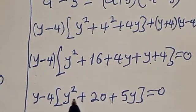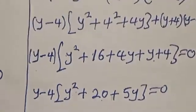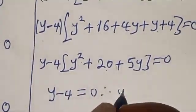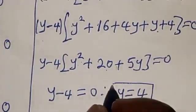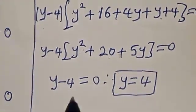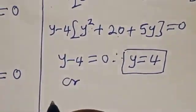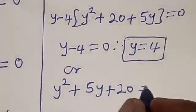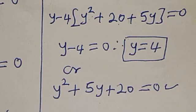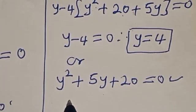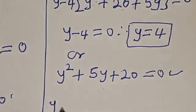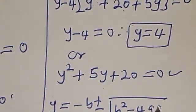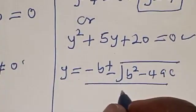Now we have two cases: y minus 4 equals zero, or y squared plus 5y plus 20 equals zero. From the first case, y minus 4 equals zero, therefore y equals 4 — that is one real value of y. For the second case, y squared plus 5y plus 20 equals zero — this is a quadratic equation which can be solved using the quadratic formula: y equals minus b plus or minus square root of b squared minus 4ac, divided by 2a.